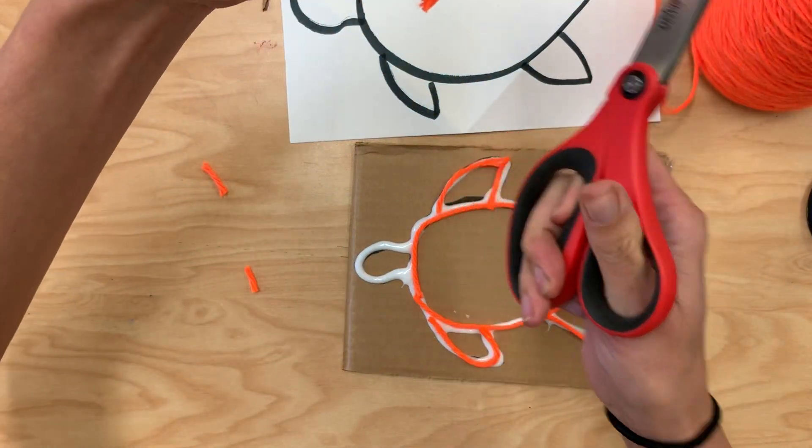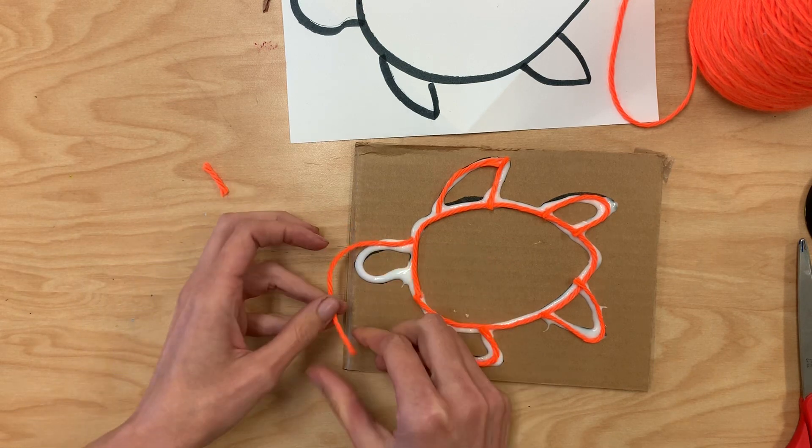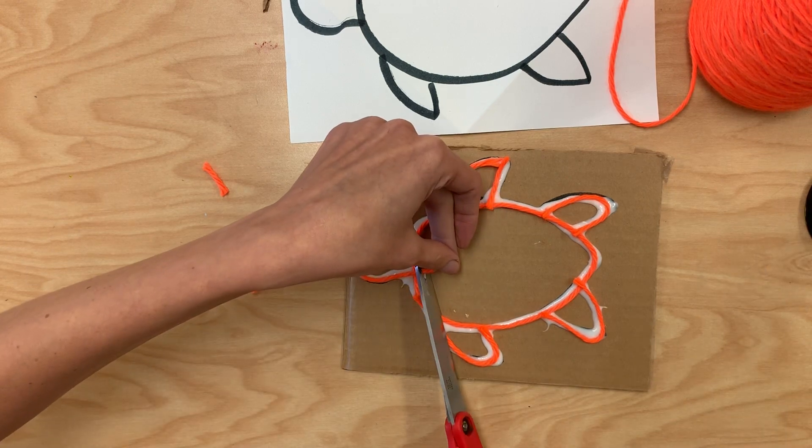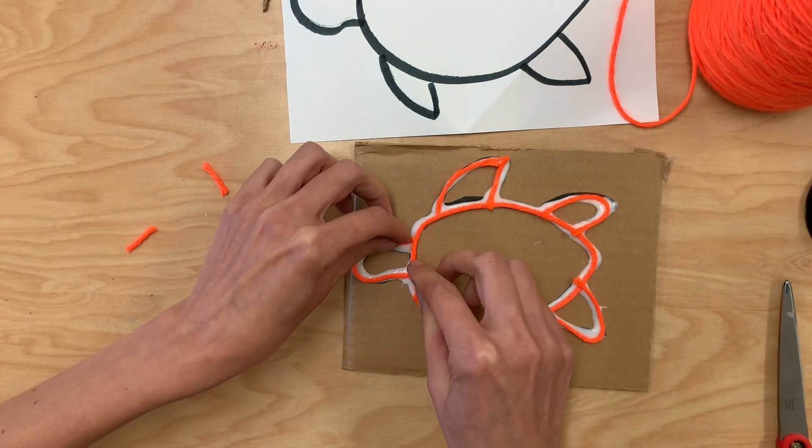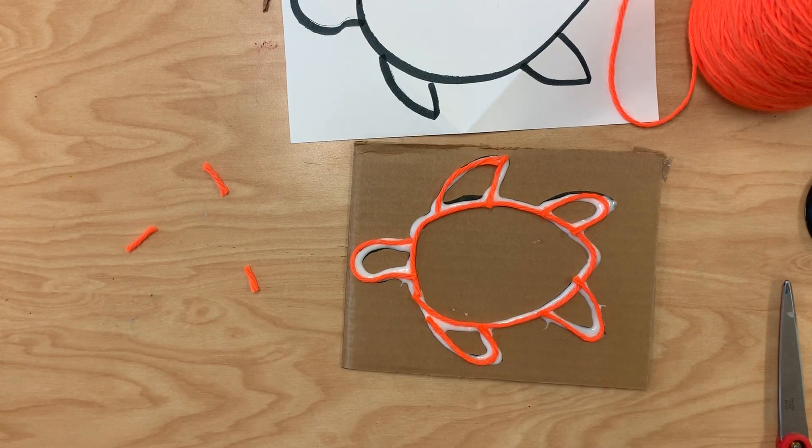And the last thing I need is going to be my head. So I'm going to place this here and gently go around, and again anywhere it's too long I'm just going to trim it off. And now this I'm going to put on the drying rack and it should be ready for the next step.